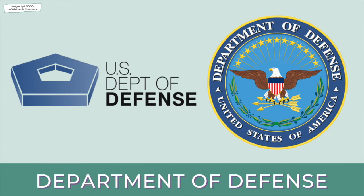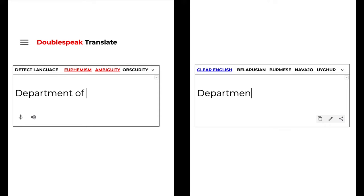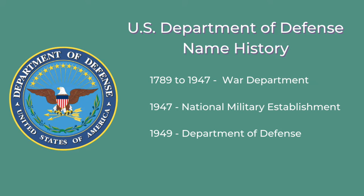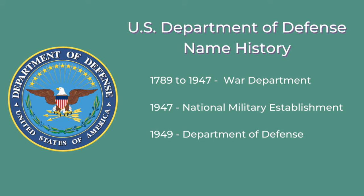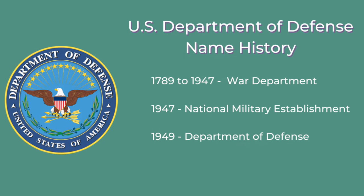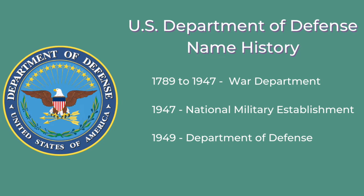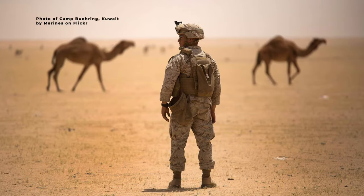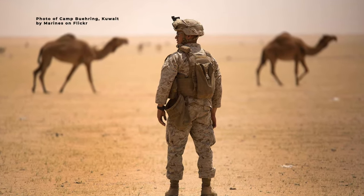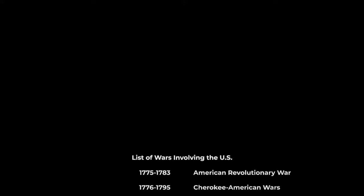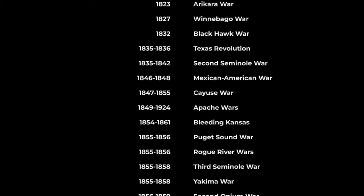Department of Defense is military doublespeak for Department of War. In fact, from 1789 to 1947, the name of the agency in charge of the U.S. military was War Department. In 1947, it changed to National Military Establishment. Then in 1949, it became what we now know as the euphemistic and ambiguous Department of Defense. While estimates of the number of U.S. military bases around the world vary, they always show that the U.S. has significantly more than any other country. It's also been at war almost continuously since it was founded.